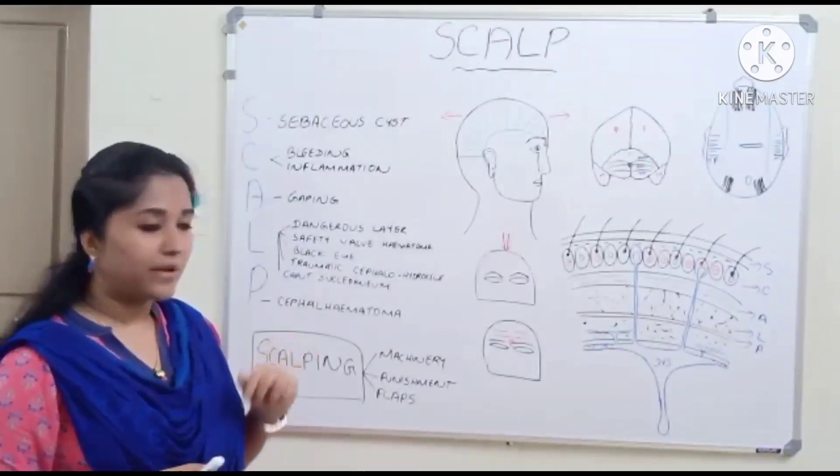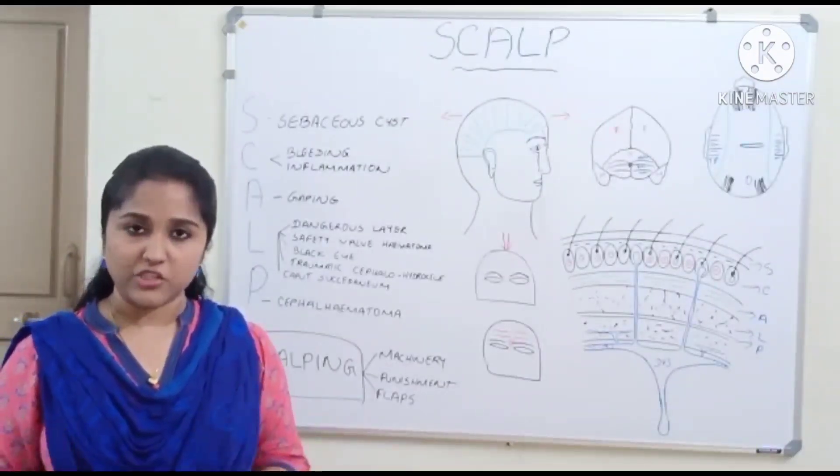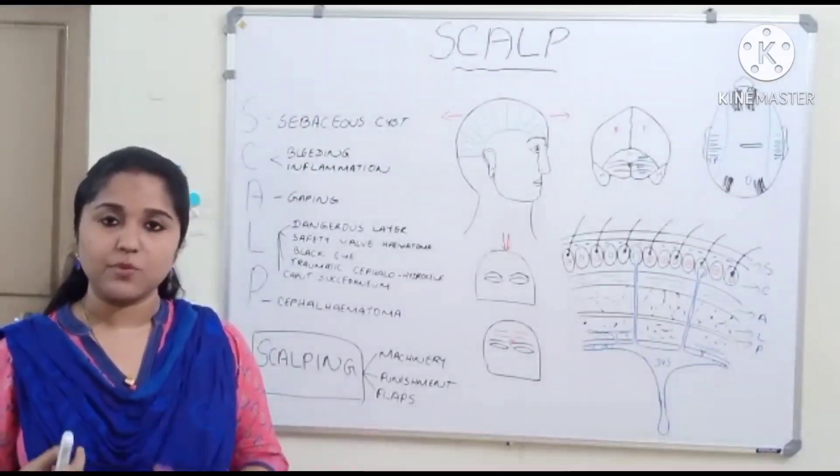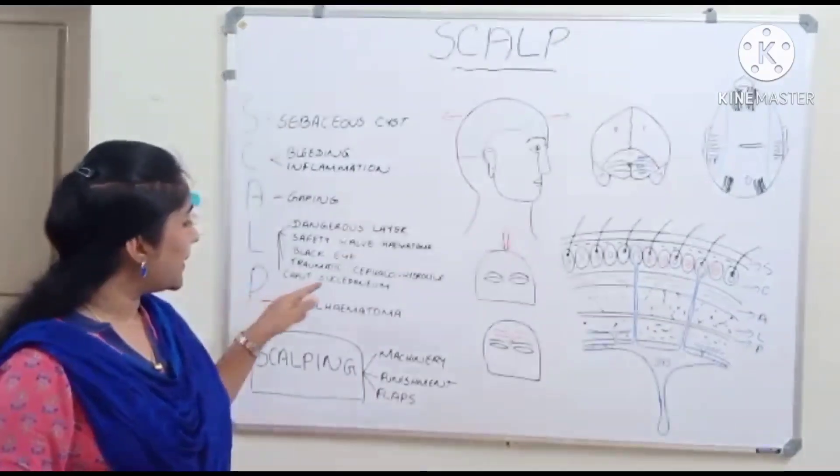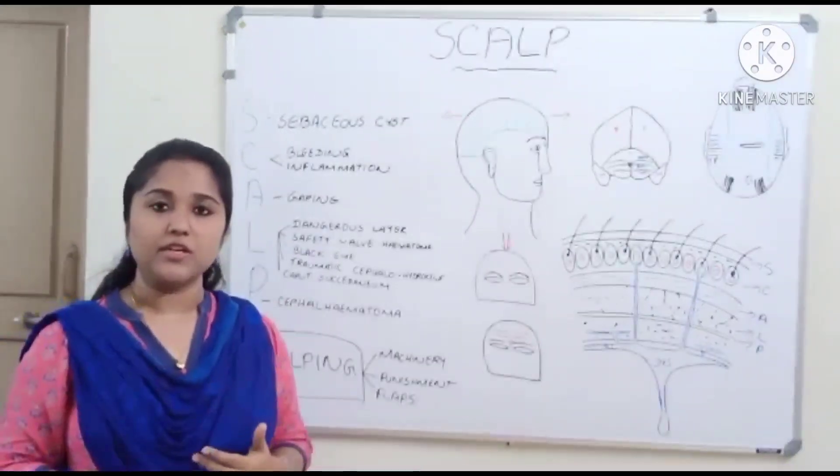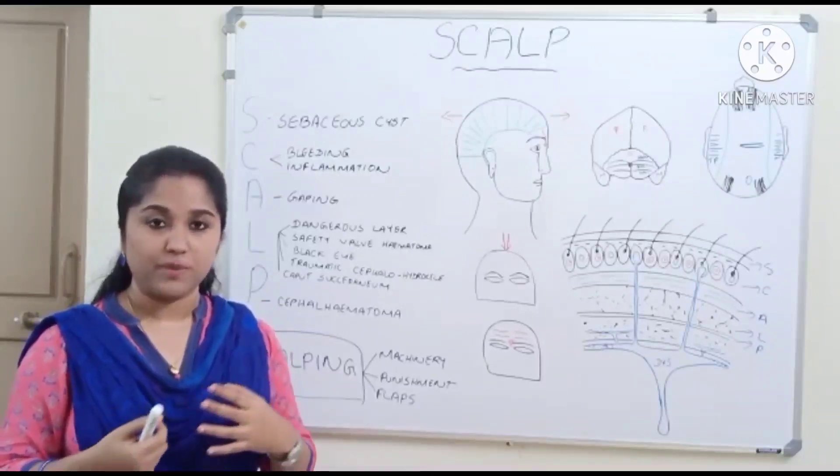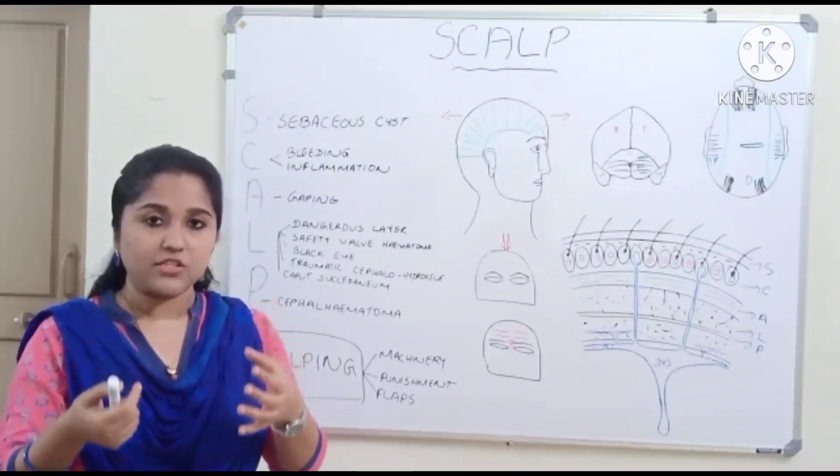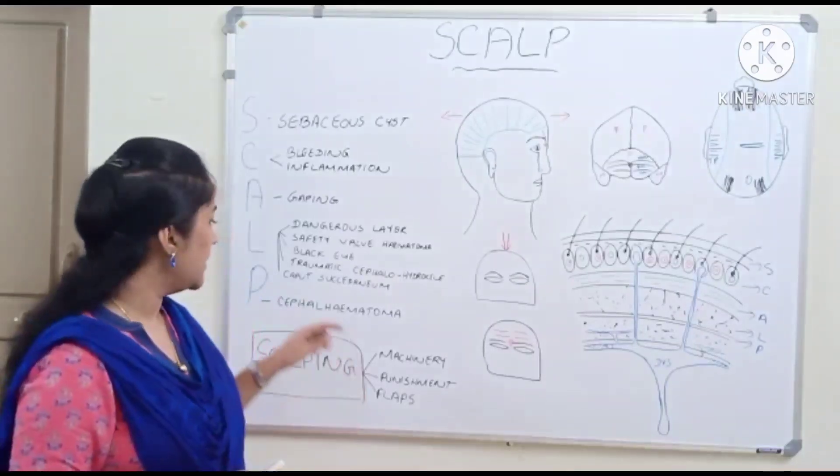The next important factor is traumatic cephalohydrocele, which can also occur in cranial vault fracture. Here, cerebrospinal fluid gets collected instead of blood. Another applied aspect is caput succedaneum, seen in newborns. It is a temporary condition occurring due to interference of venous return during passage of the baby's head through the birth canal.